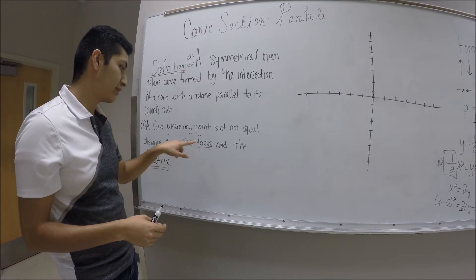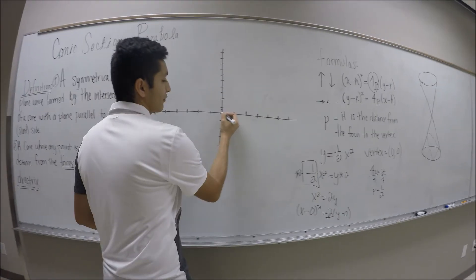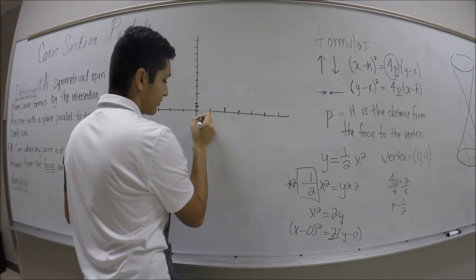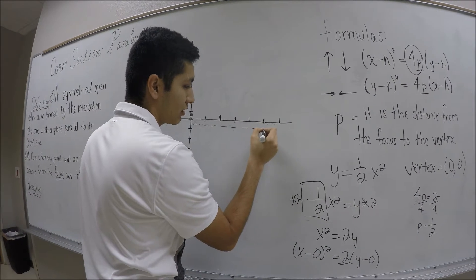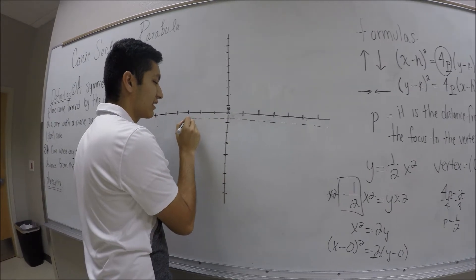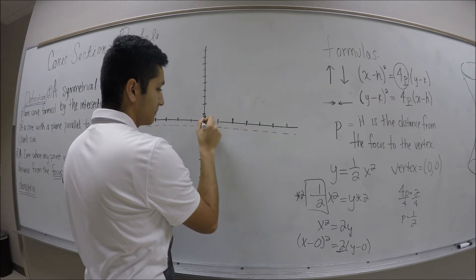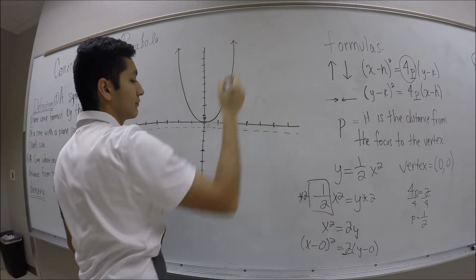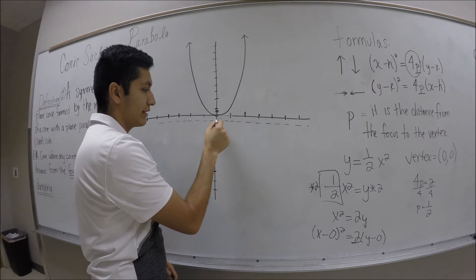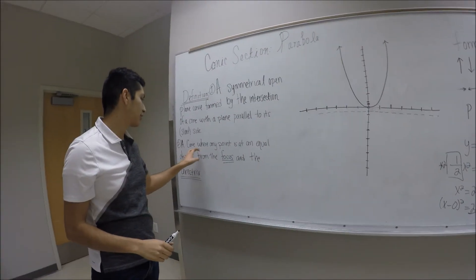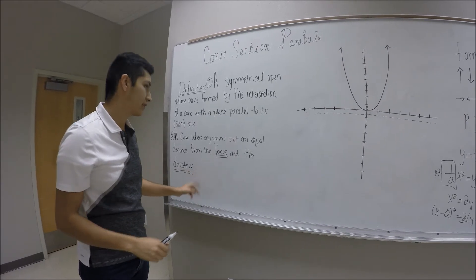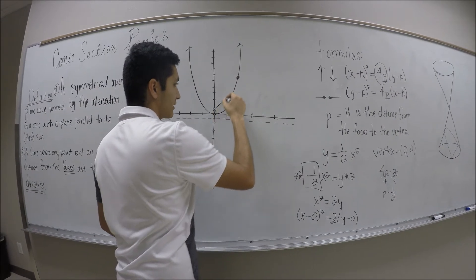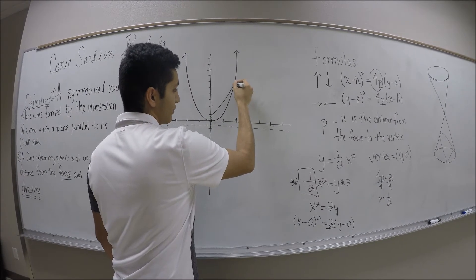The formulas for the parabola: there are four types. For a parabola that opens up or down, the formula is (x minus h) squared equals 4p times (y minus k), where p is the distance from the focus to the vertex. For a parabola that opens to the right or to the left, the formula is (y minus k) squared equals 4p times (x minus h).